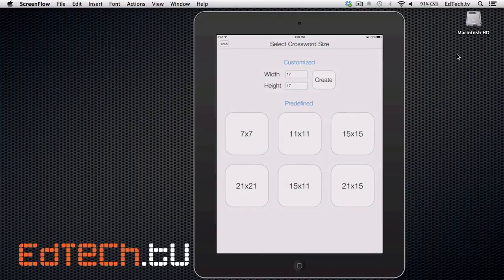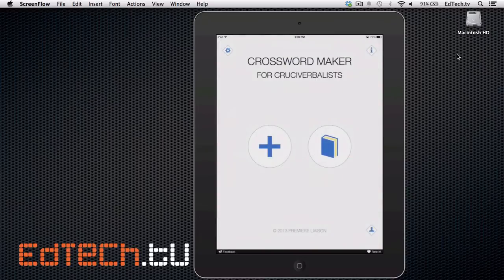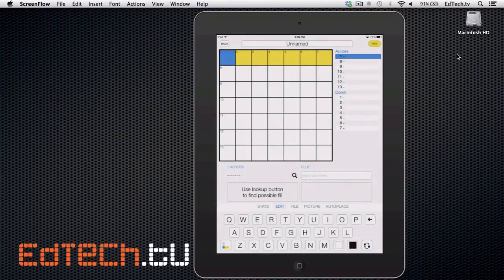Now here's where it starts with everything. You can choose the size of your crossword. They give you predefined ones that are common sizes, 7x7 up to 21x15, or you can also create up here at the top, you can create your own custom sizes. But for today, we're just going to go with the simple 7x7. And it gives you the choice here. It says, do you want to use the iCloud, or do you want to store locally? That's up to you. I'll store locally. And here we start.